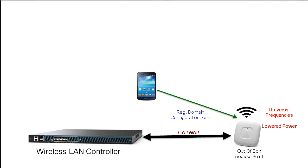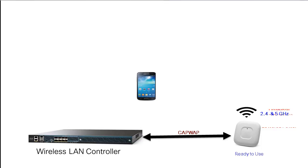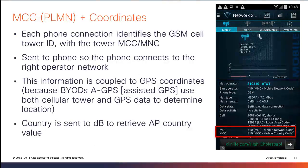From that point on, your access point is primed and ready to use, and is going to send NDP (Neighbor Discovery Protocol) messages out of its radio so that neighboring access points using the universal SKU that are not yet primed can learn the country information from that first access point. One key item of this process is the connection to the cell tower.